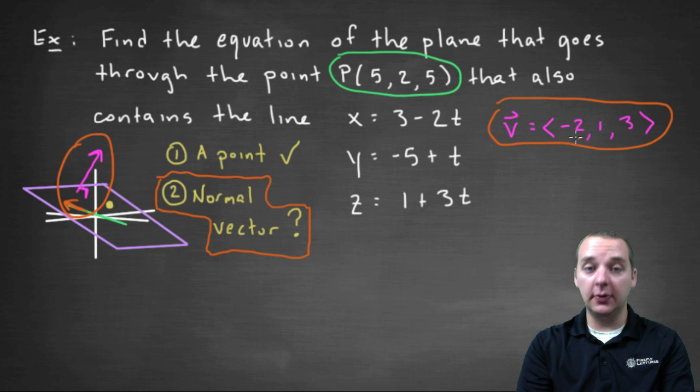So one of our vectors is (-2,1,3). But who's the other vector? Well this line here can reveal a lot of the different points that are on your line. I'm sorry, a lot of the points that are in your plane, because all the points on the line are in the plane. And then we also have another point in the plane, this (5,2,5) point here. So what can we do?